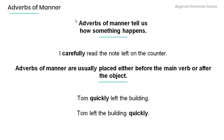An adverb of manner tells us how something happens. Have a look at the example: 'I carefully read the note left on the counter.' The adverb of manner 'carefully' modifies the verb 'read' and tells us how we read. Also note that adverbs of manner are usually placed either before the main verb or after the object.